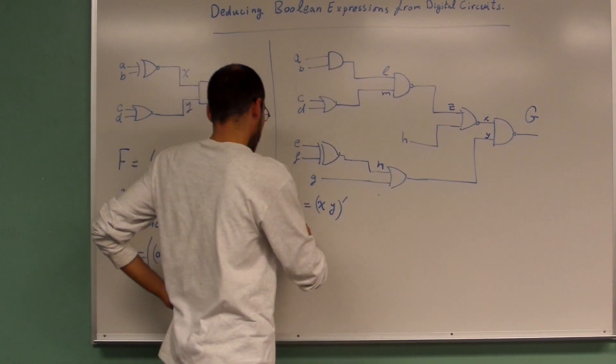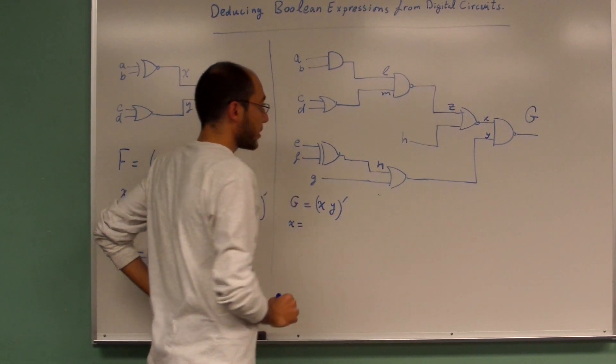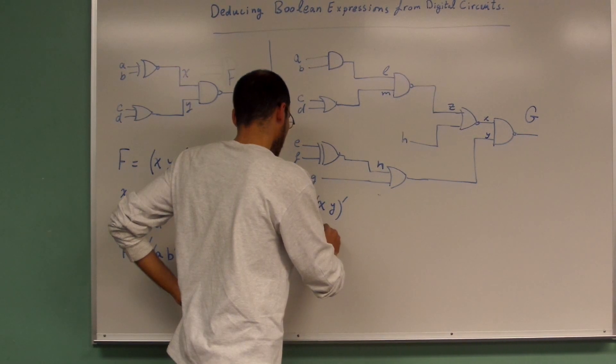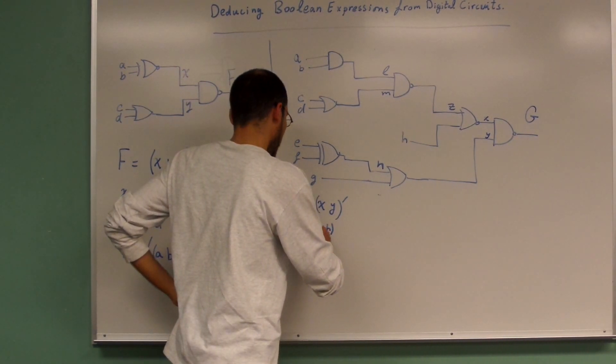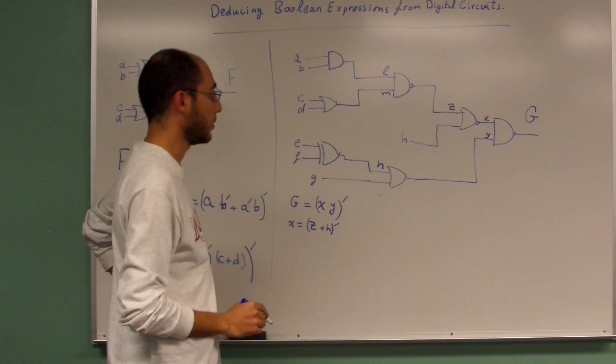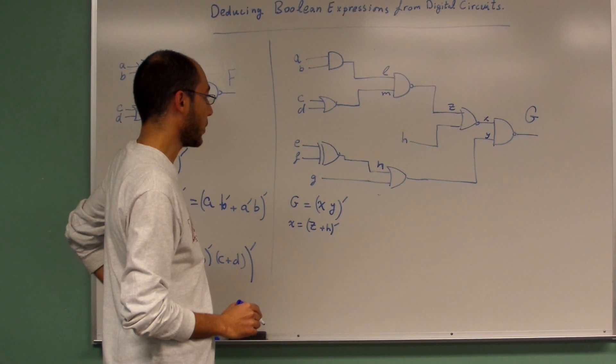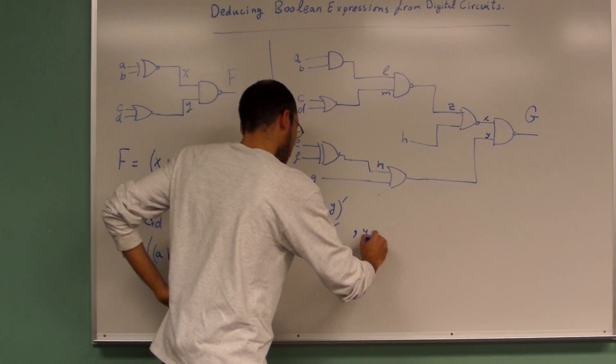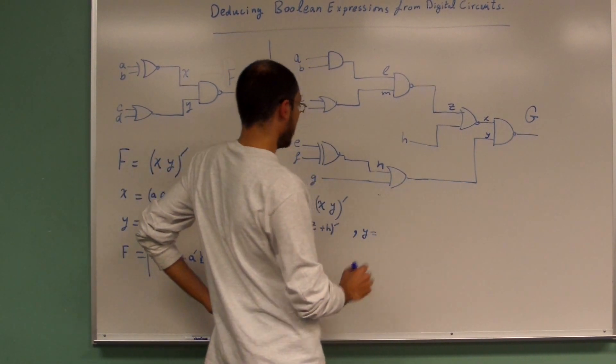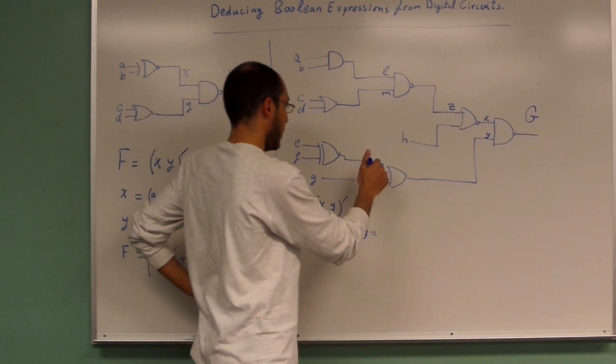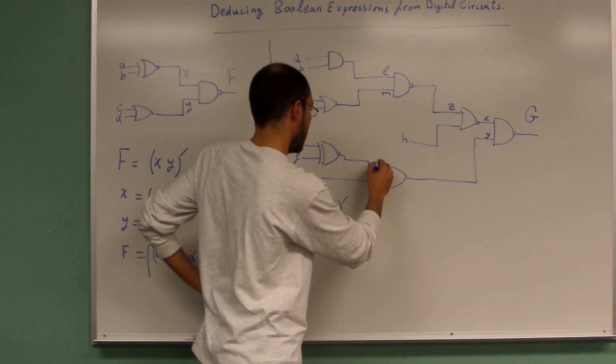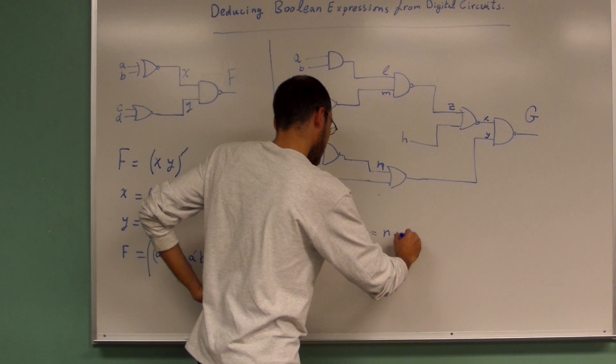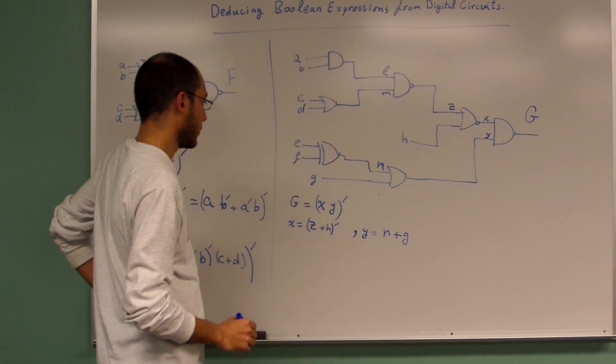What is the value of X? X equals Z multiplied with H and then a not gate. What is the value of Y? Y equals H—this is M—and then plus N.